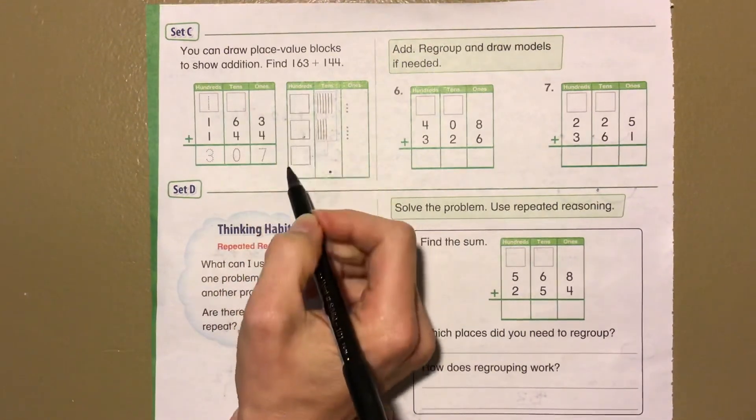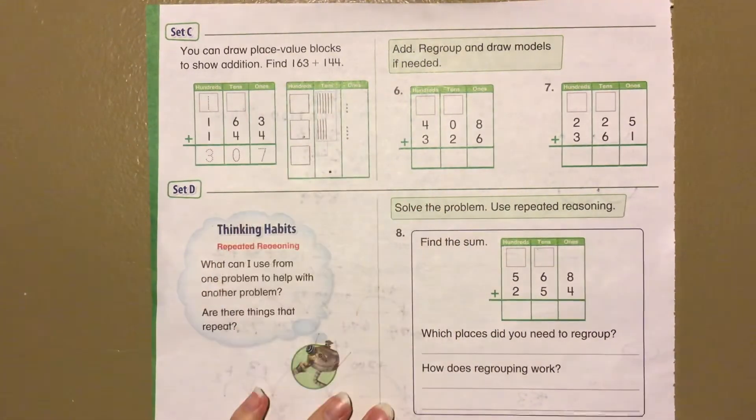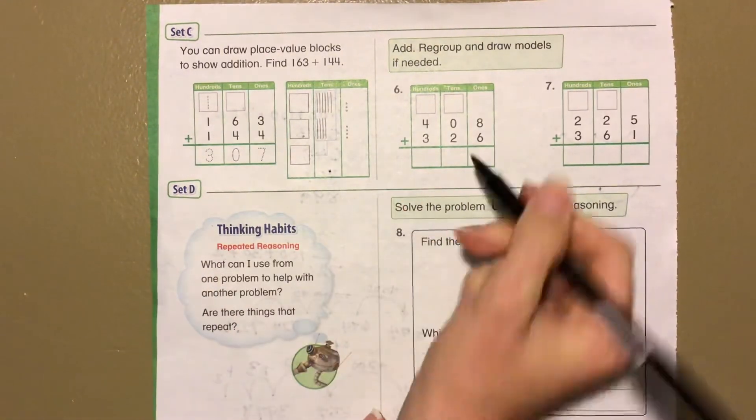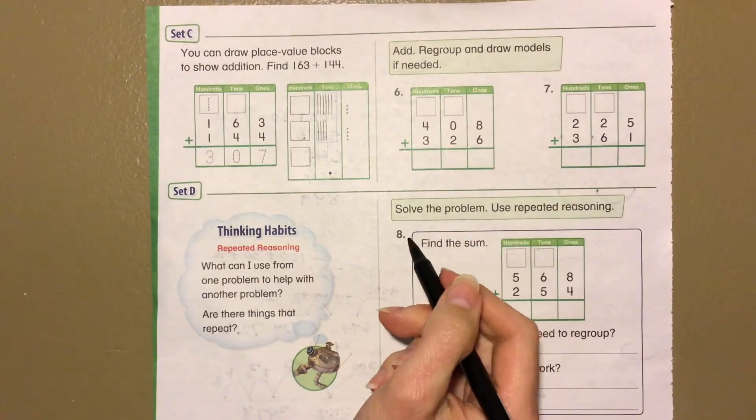You can draw place value blocks to show addition. Find 163 plus 144. So we did our place value blocks, and then we can regroup them. Let's go straight and do this. We can draw our models if needed.